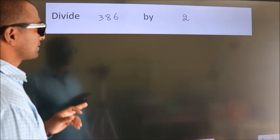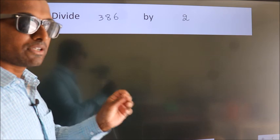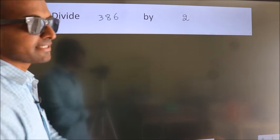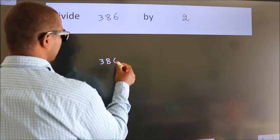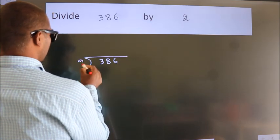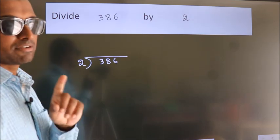Divide 386 by 2. To do this division, we should frame it in this way. 386 here, 2 here. This is your step 1.